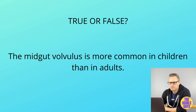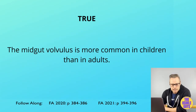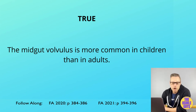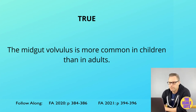Midgut volvulus is more commonly seen in infants and children, while sigmoid volvulus is the more common type in adults. Volvulus is a twisting of a bowel portion around its mesentery, which can cause both obstruction and infarction.